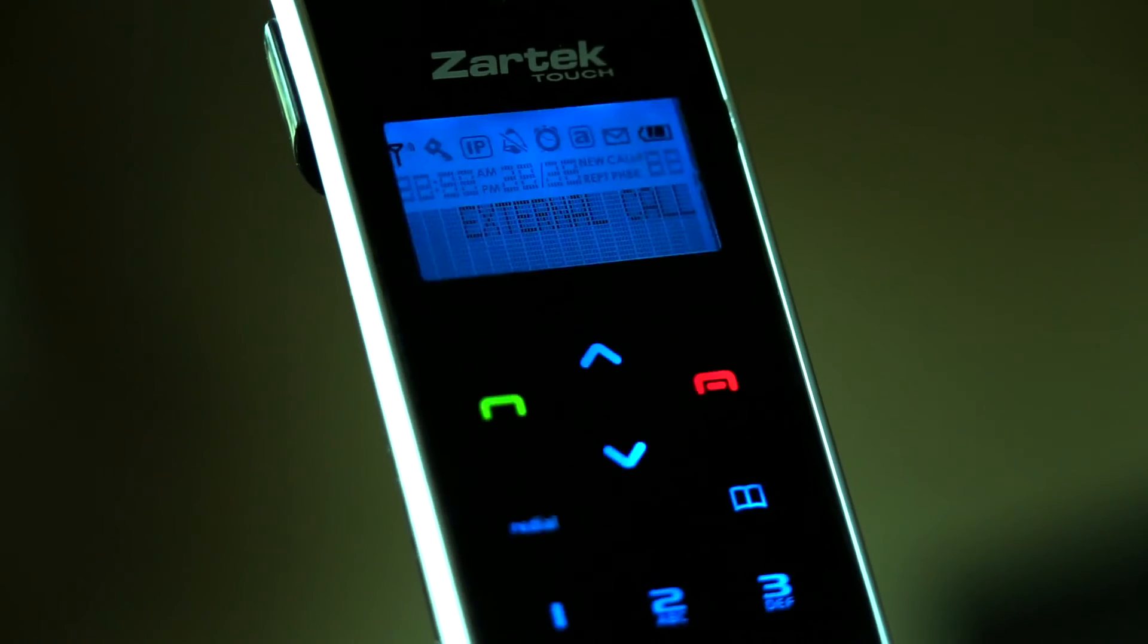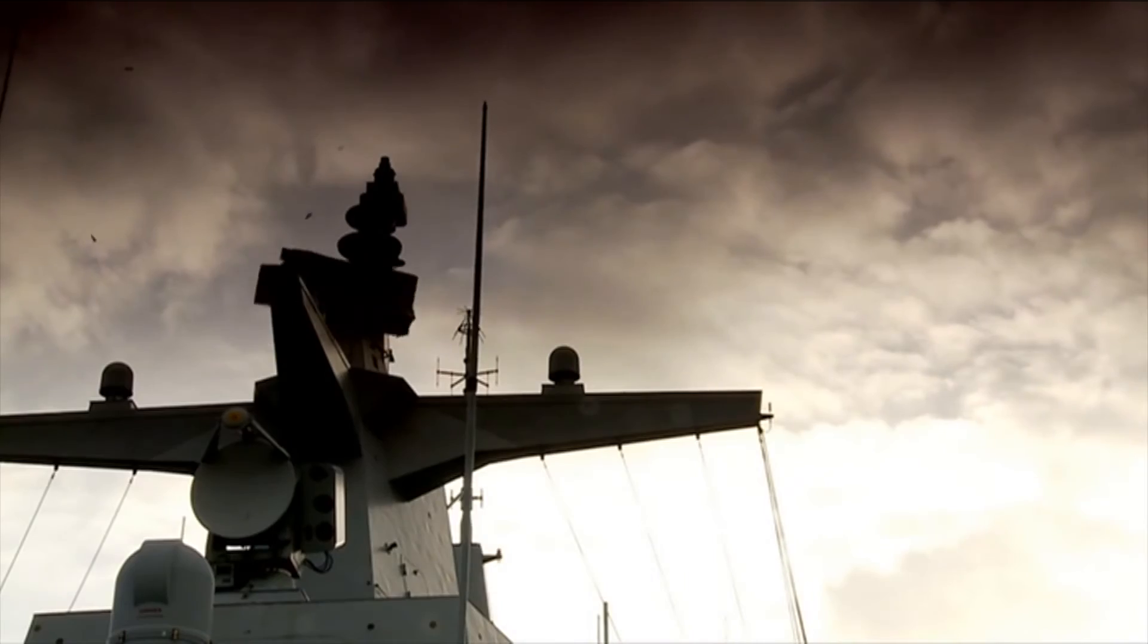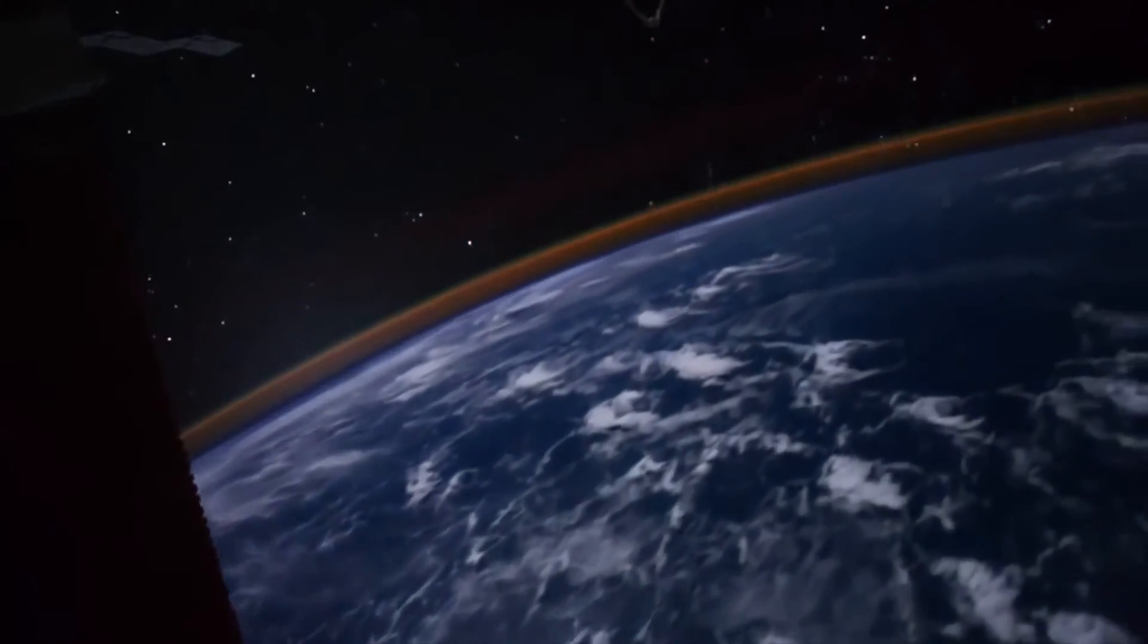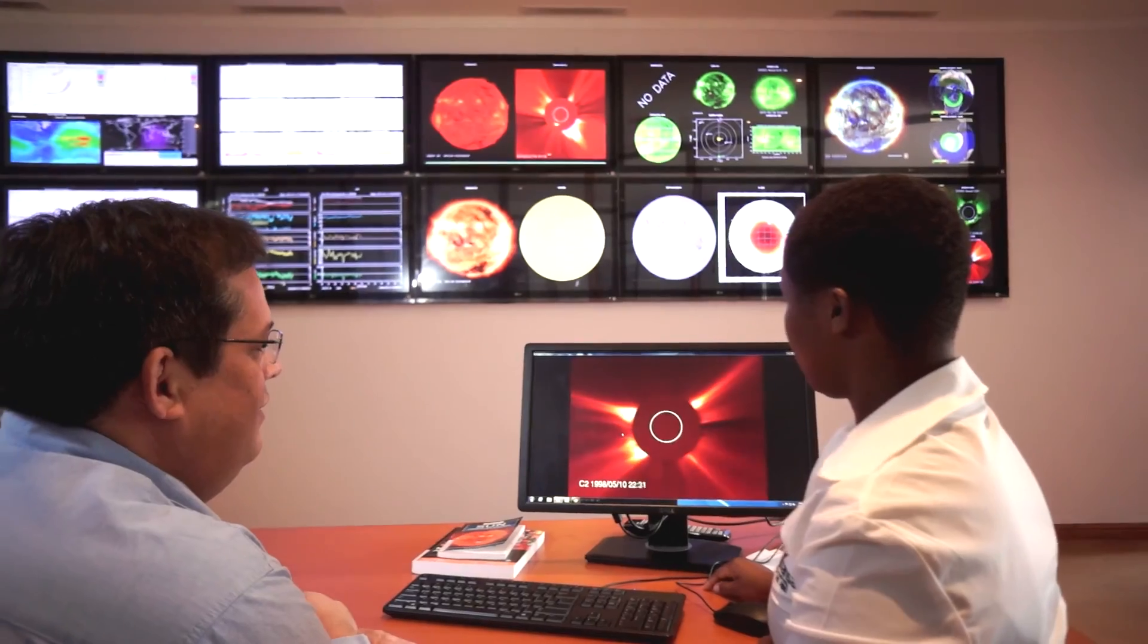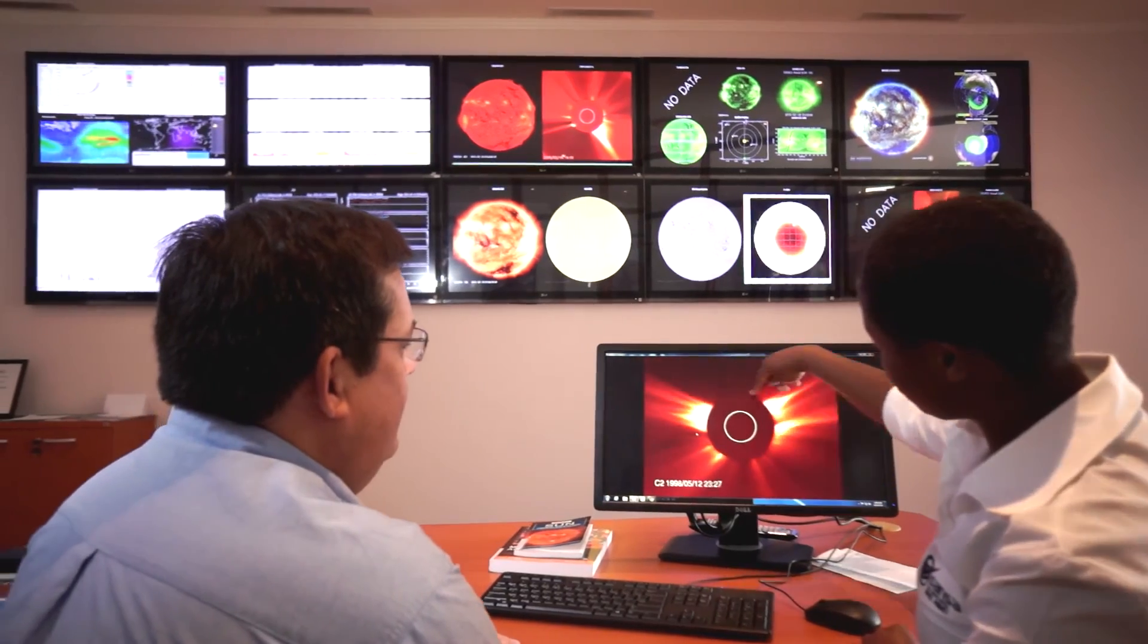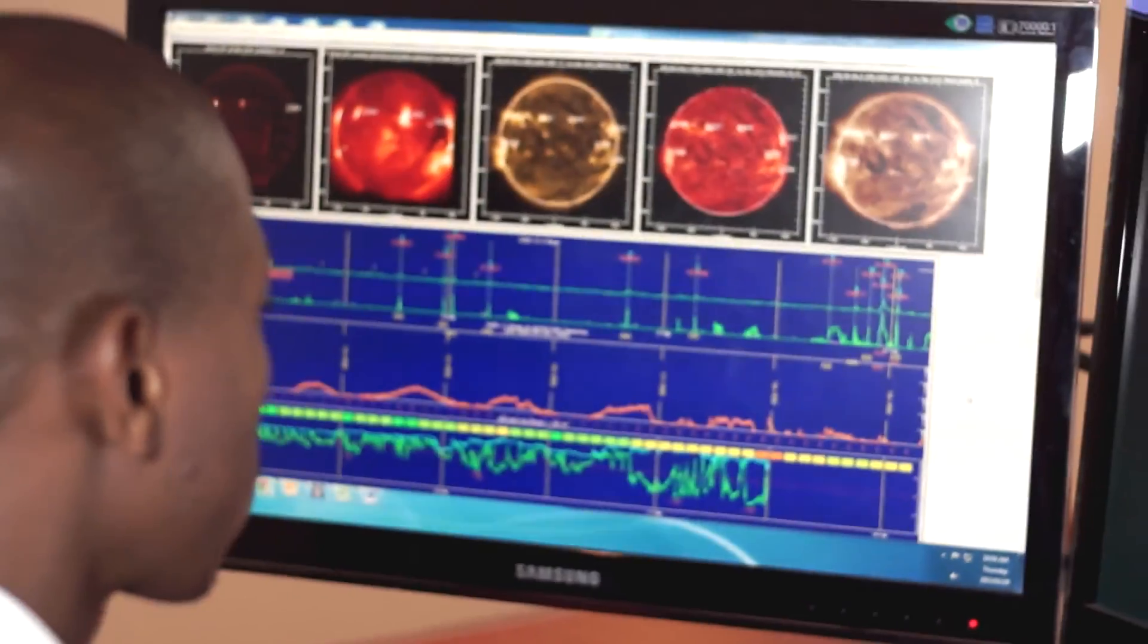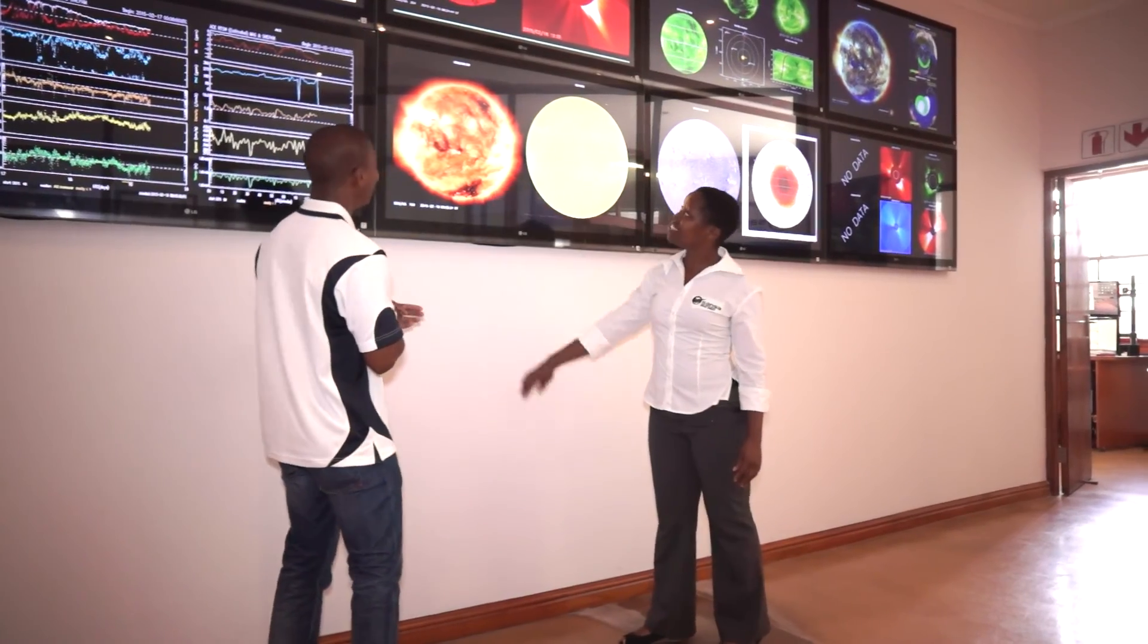To protect the technology we depend on daily, we have to understand the environment it operates in, which is why it's critical to monitor our near-Earth space environment. The South African National Space Agency is constantly monitoring space weather and the Earth's magnetic field in order to provide our clients and the nation with cutting-edge space science services, information and training.